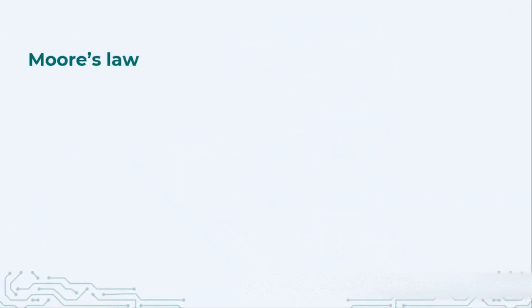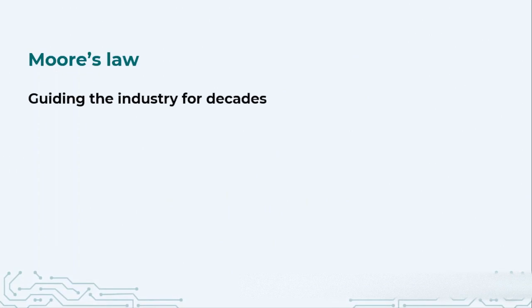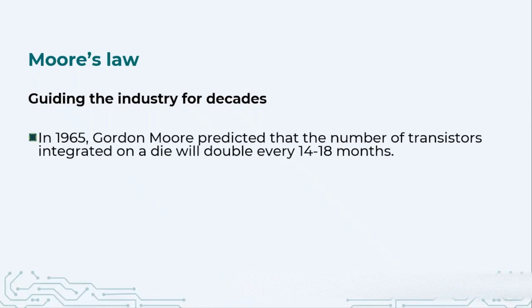Let us talk about a very important law called Moore's law. This law has been guiding the industry for decades about how this industry will grow. In 1965 Gordon Moore said that in every 14 to 18 months the number of transistors that we integrate on a single chip will double. So in around 3 years we will be able to put together 4 times the number of transistors. In another 3 years another 4 times, so total 16 times.